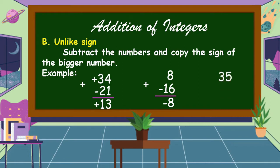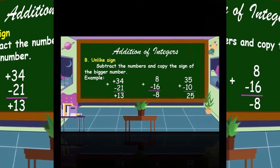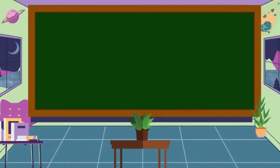Another example: 35 plus negative 10. 35 is positive and 10 is negative, so we subtract. 35 minus 10 is equal to 25.